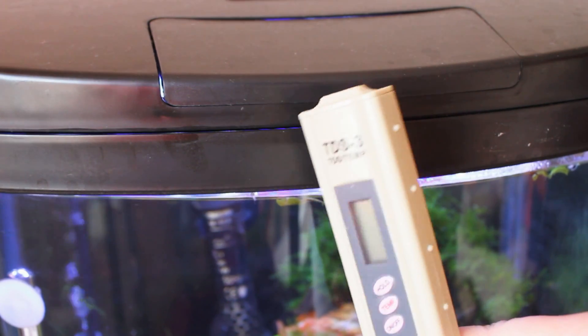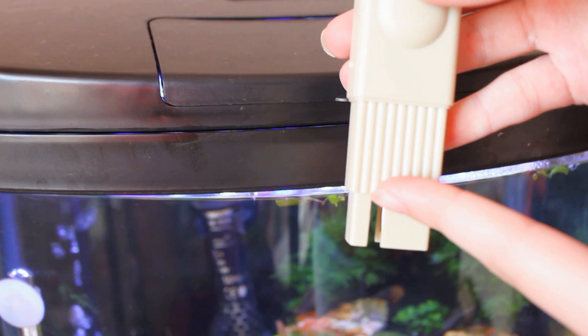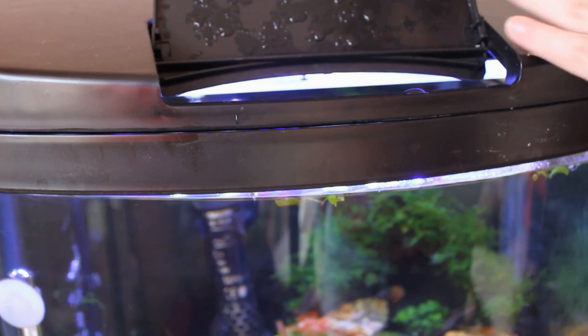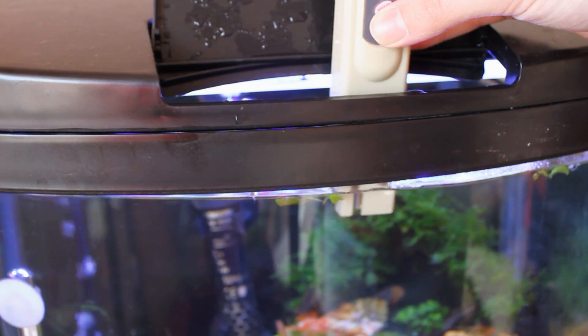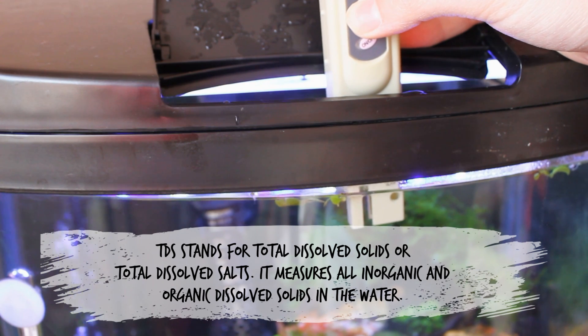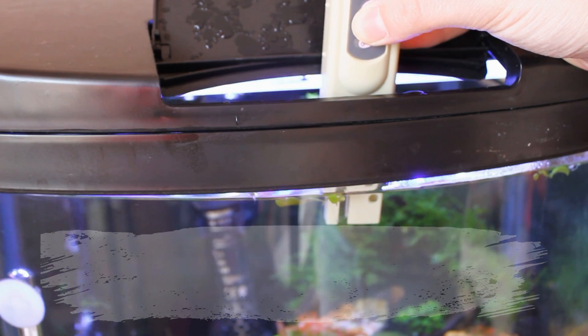We'll do the first test, the TDS meter. You have to dip it in the water up to here, you don't want to go beyond this point. Let's just pop that in there, you can see that go in, and then we press on and it says 157 ppm.